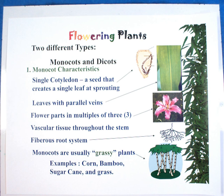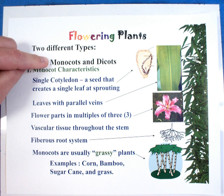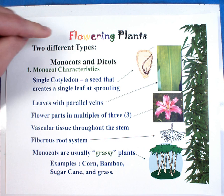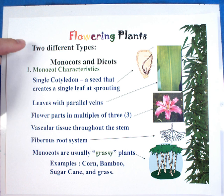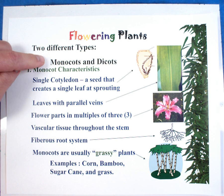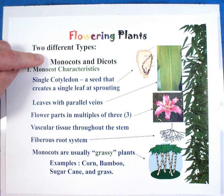In this video, we will be talking about the difference between monocots and dicots. You'll notice at the top of this, we're talking about flowering plants, and there are two different kinds: monocots and dicots.